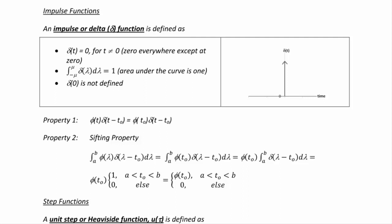There are two properties of the impulse function. The first is that φ(t)·δ(t - t_0) = φ(t_0)·δ(t - t_0), because since the impulse function is zero everywhere except at t_0, it picks off the value of φ at that point. The sifting property states that the integral from a to b of φ(λ)·δ(λ - t_0) dλ equals φ(t_0) times the integral from a to b of δ(λ - t_0) dλ, which can be factored as φ(t_0) times the integral.